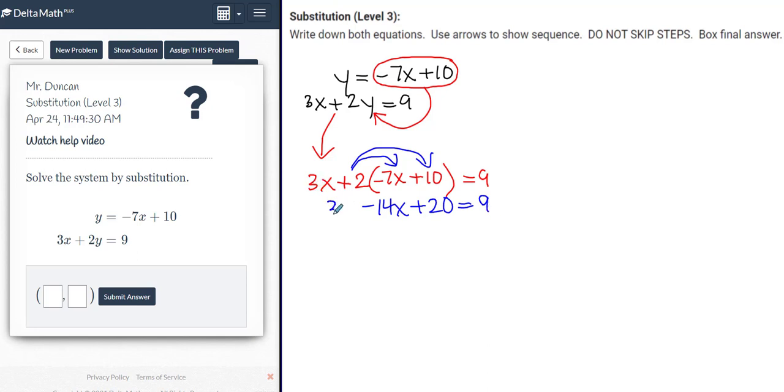Bring everything else down. Bring down the 3x. Now I'm going to combine like terms. I'm going to combine my x terms together. So 3x minus 14x is negative 11x plus 20 is equal to 9.